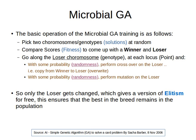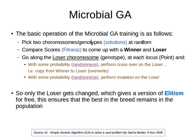We create our initial population of candidate solutions or chromosomes — also called genotypes, as explained in the first video where we covered the difference between genotype and phenotype. We randomly create this initial population by generating random solutions.